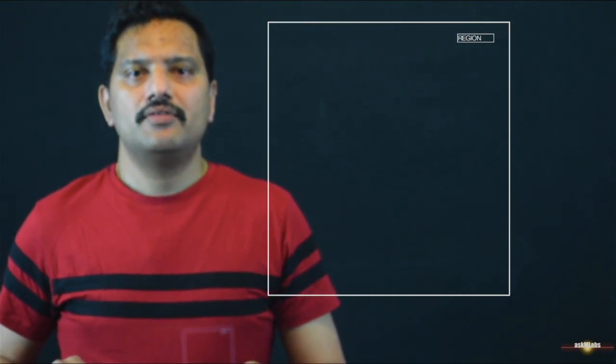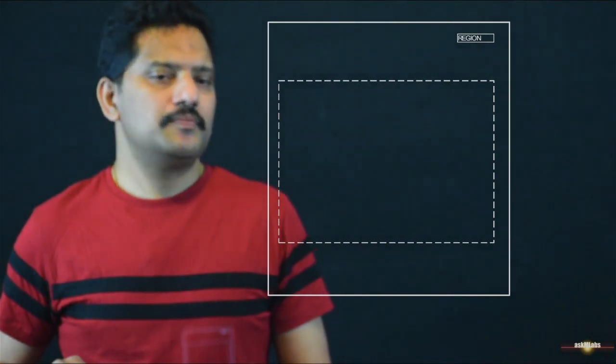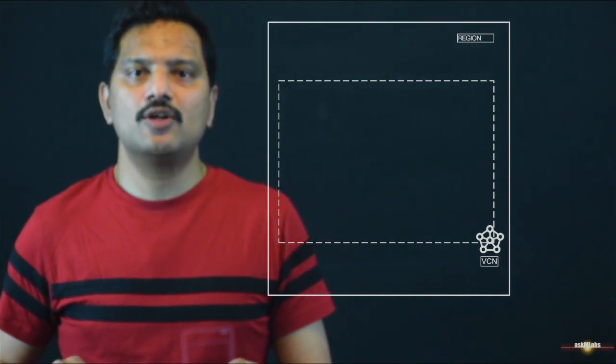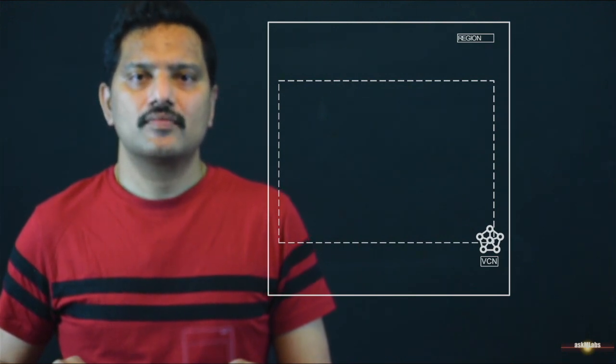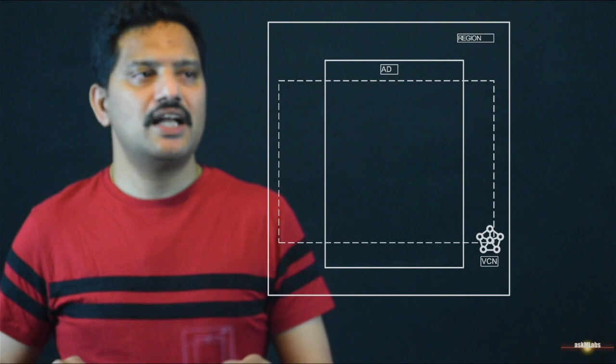Each cloud provider will define a region. A region is a geographic location. Within each region, we can have an availability domain, and a VCN is defined in an availability domain. Let's assume that we have a VCN defined in this region, and this VCN can be defined in a single availability domain or across multiple availability domains. Let's assume that we have this VCN defined in a single availability domain.